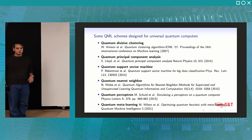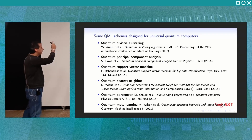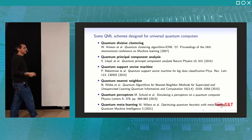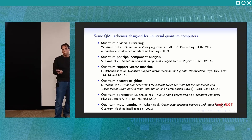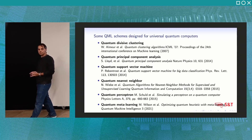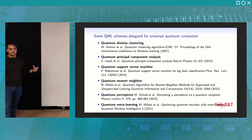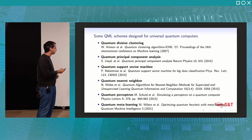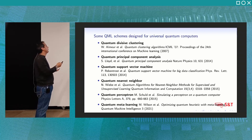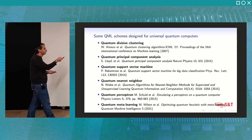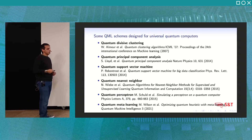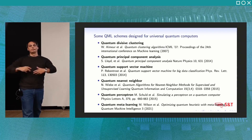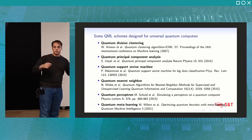There is literature on quantum machine learning schemes designed for universal quantum computers — we are still within theory, since large-scale universal quantum computers do not exist right now. Examples include quantum versions of k-means clustering, PCA, quantum support vector machines, a quantum version of the perceptron, and attempts to construct feed-forward neural networks using quantum perceptrons.